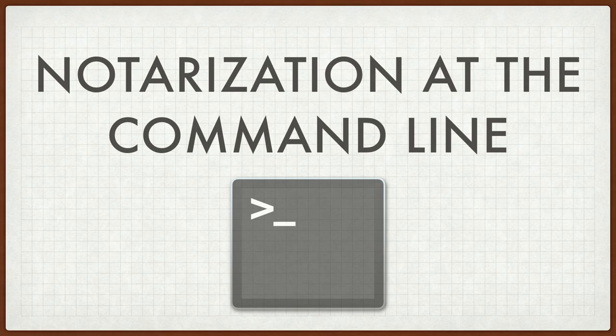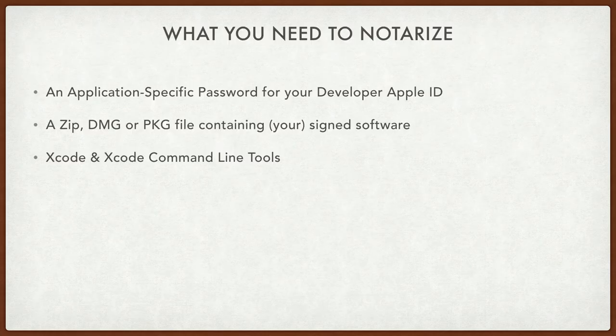Notarization at the command line is a different beast. You need some additional things. The first thing that you need is an application-specific password for your developer Apple ID. If you've never generated one of these, you can go to appleid.apple.com, sign in with your developer ID, and in the security section you can generate an app-specific password. Call it 'Xcode notarization,' or 'binary notarization,' or just call it Fred. And then you're going to get back a lengthy alphanumeric key — I think it's just alpha, A through Z, six blocks of four letters with dashes in between. Once you have your signed software in a zipped image or package file, you'll also need Xcode and the Xcode command line tools. And we're going to talk about signing and notarizing the Monkey Tools.